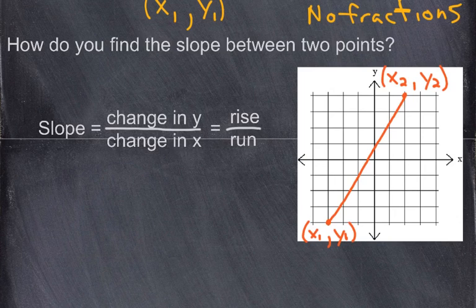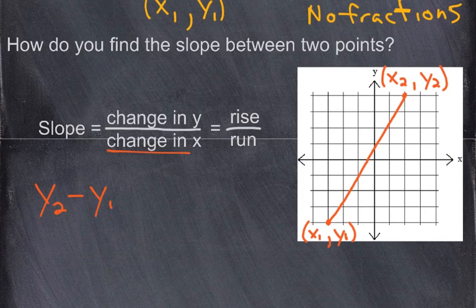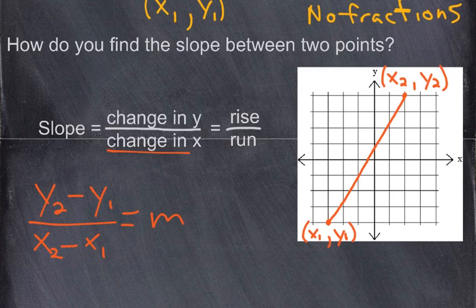The formula for slope is: you take one y value, starting with y2, and subtract the other — so y2 minus y1 — over the change in x values, x2 minus x1. That is our formula for slope. It doesn't matter which y value you start with, as long as you start with that same x value on the bottom.